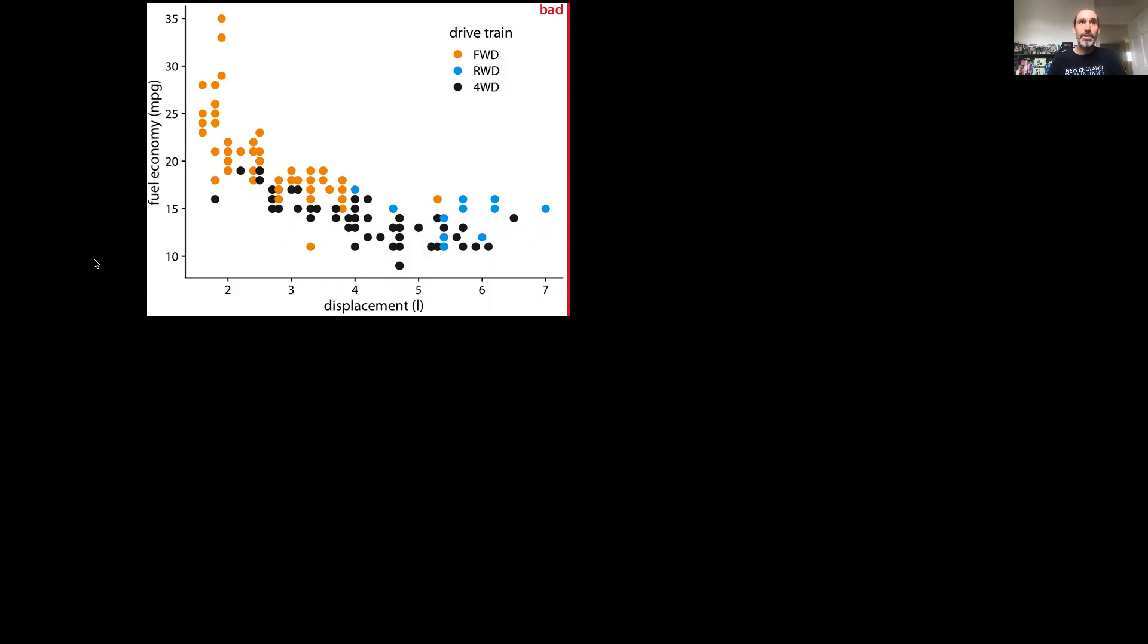This figure on fuel economy is a great example of that, where it has a feature that's common to a lot of data, which is the data actually have some degree of discretization. If we look at fuel economy, all the data points align in rows. We're only getting a certain number of significant digits, to an integer value.